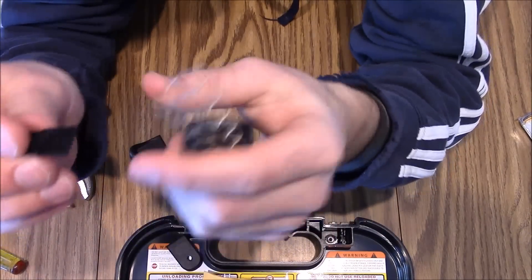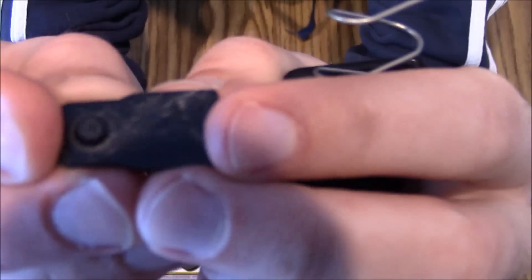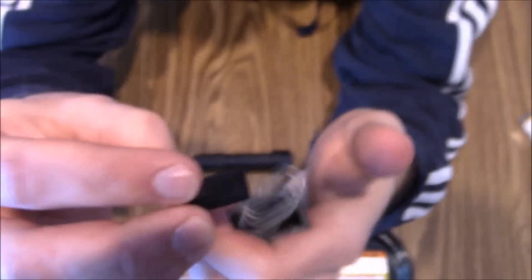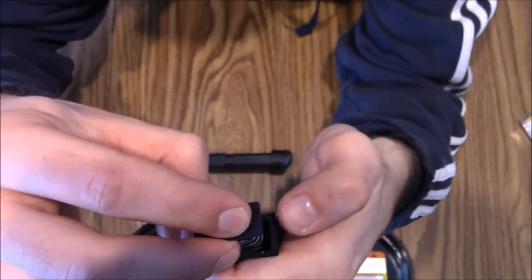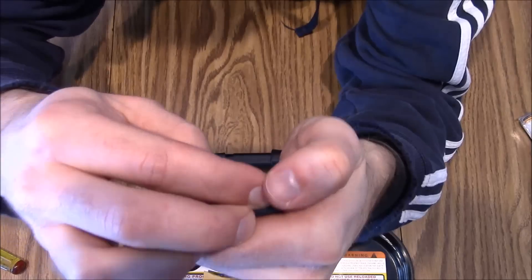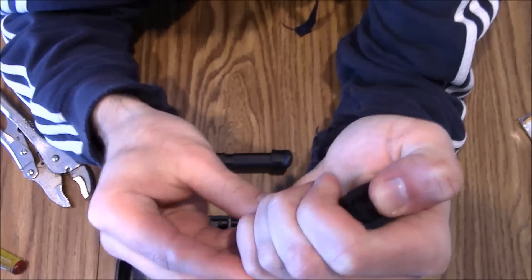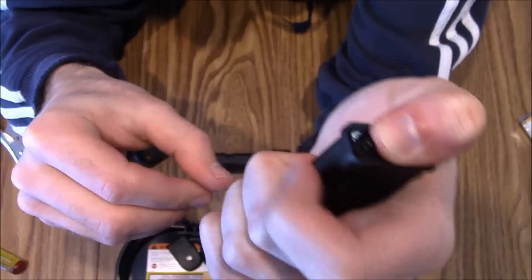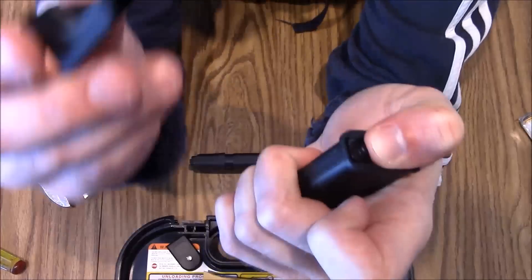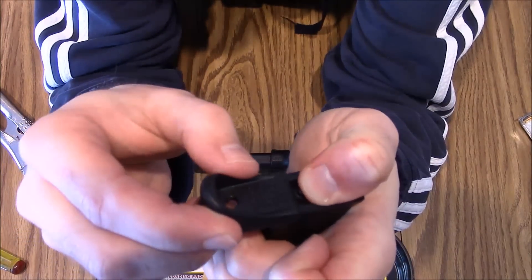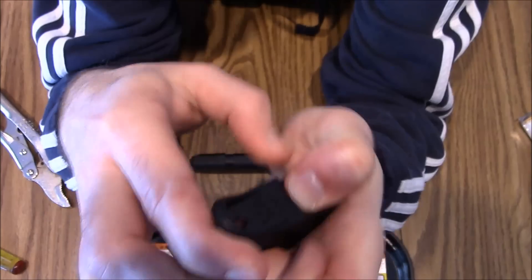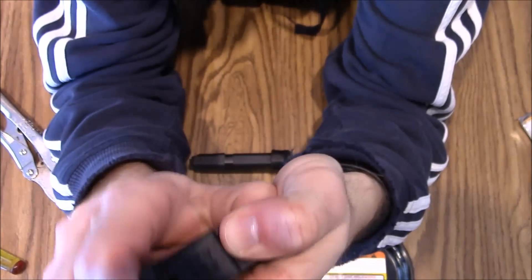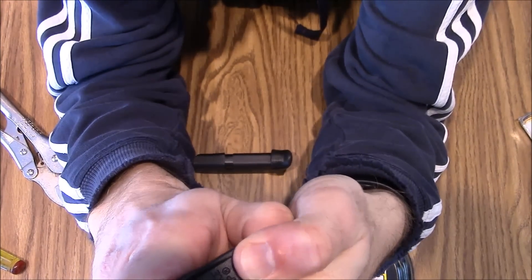So to put it back on, we're going to put this with the little tab, just a little tab there facing up. We're going to push the spring back in. Hold that flush with the bottom of the magazine.